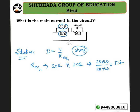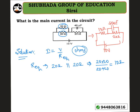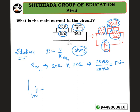We also have a 20 ohm resistance and a 40 microfarad capacitor in the circuit. The capacitor blocks DC current, so in steady state the capacitor branch is open. The equivalent circuit becomes a 10 volt battery with 10 ohm and 20 ohm resistances in series.